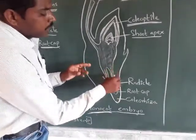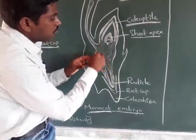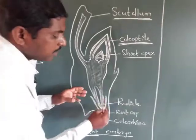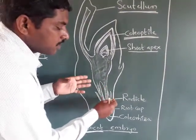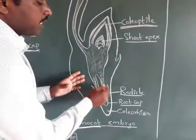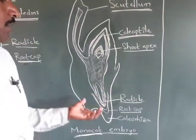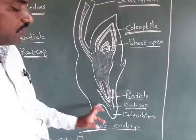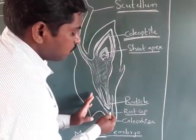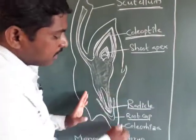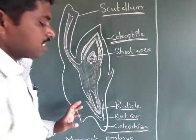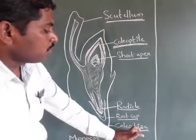The embryonal axis below the scutellum region is called the hypocotyl. This ends with a radicle and a root cap, which are enclosed by an undifferentiated sheath called the coleorhiza.